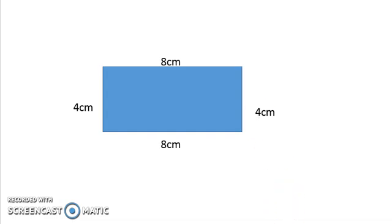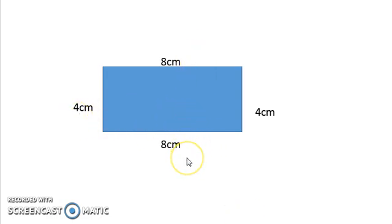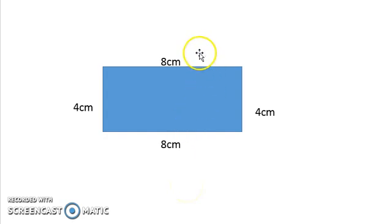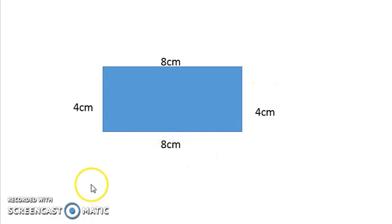The relationship between the lengths and widths of the sides of a rectangle is that opposite sides or parallel sides of a rectangle are the same. Now let's incorporate our formula for the perimeter of a rectangle.